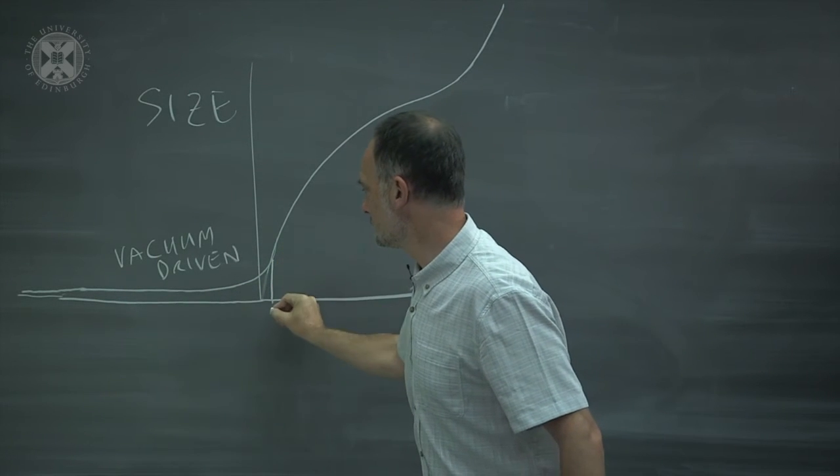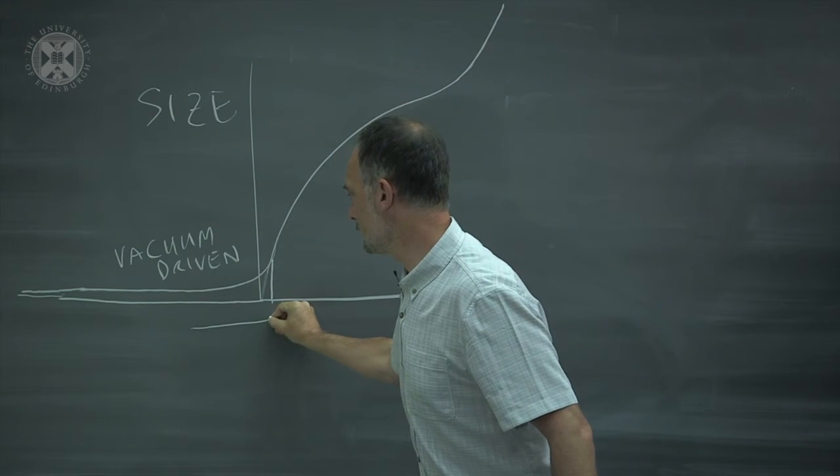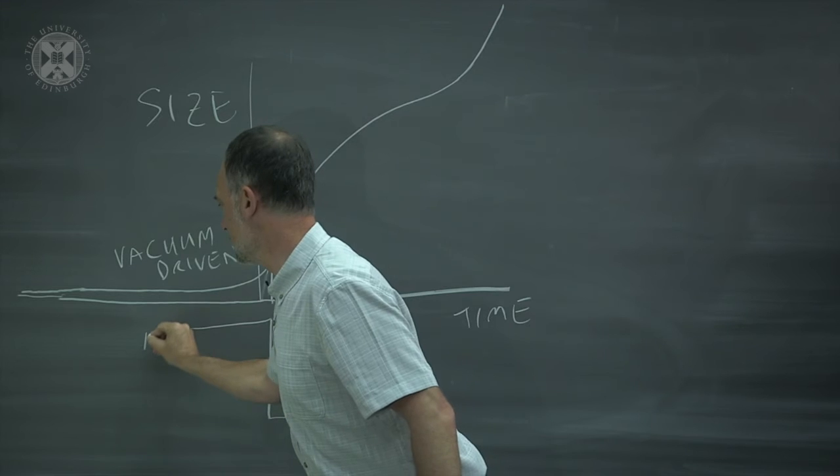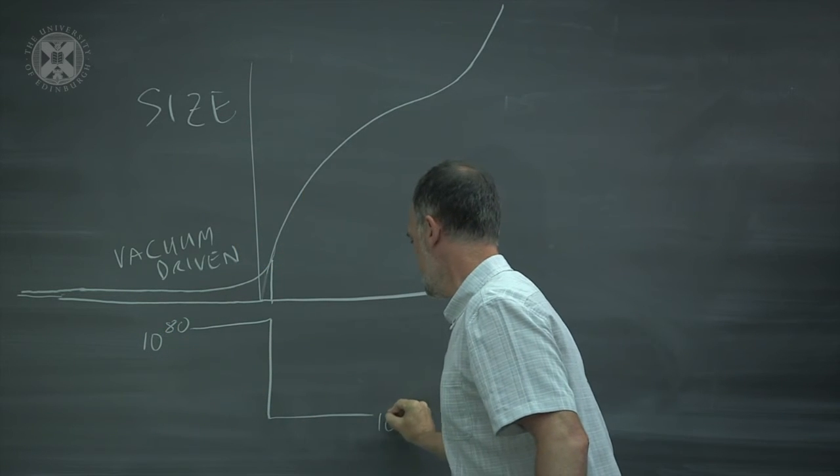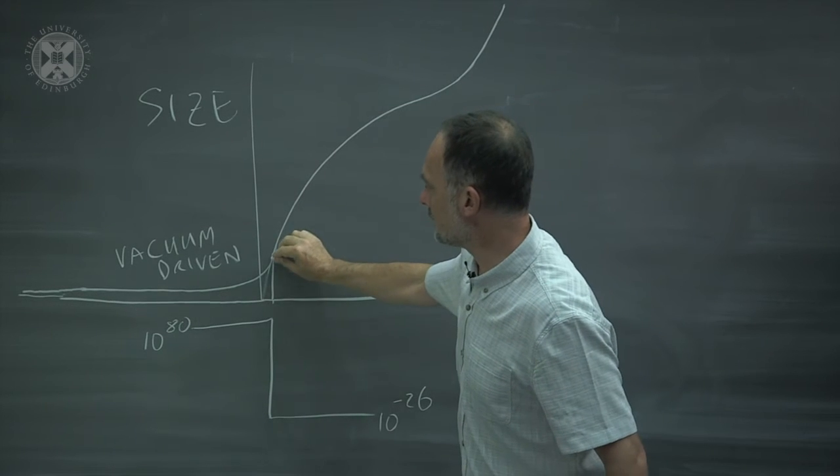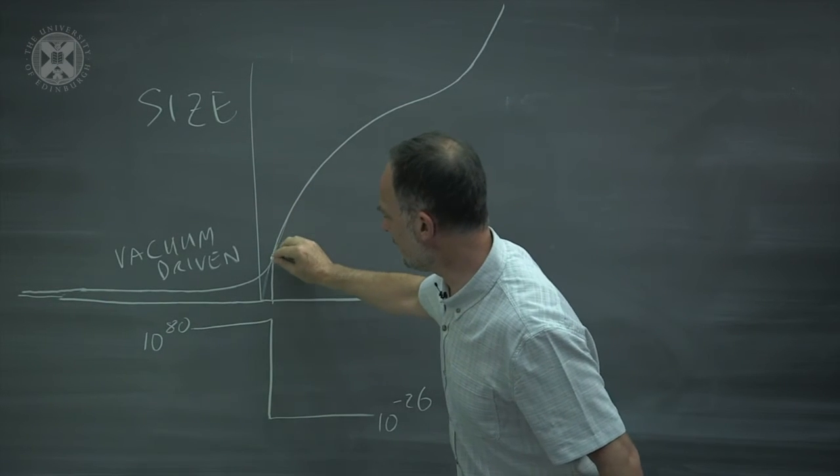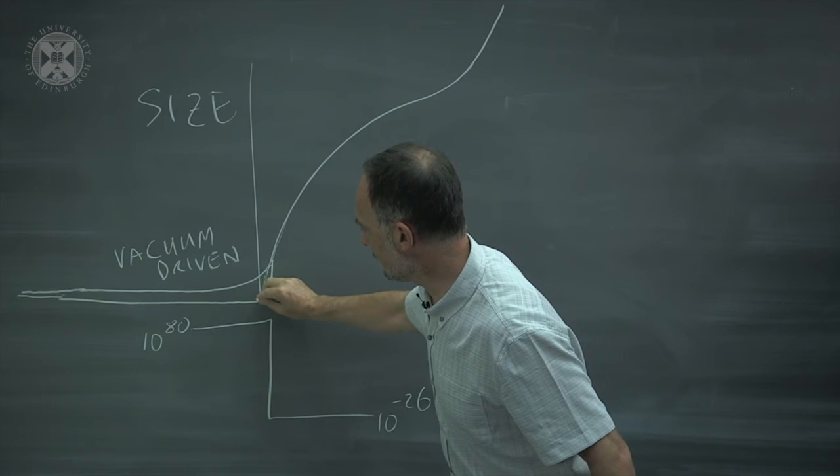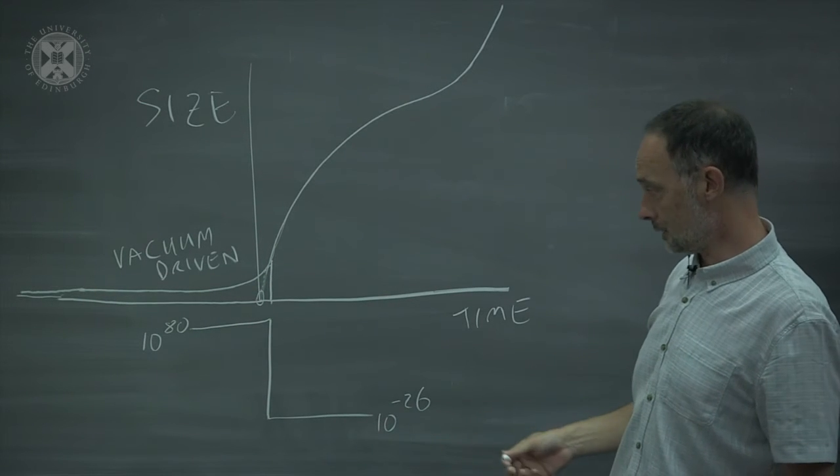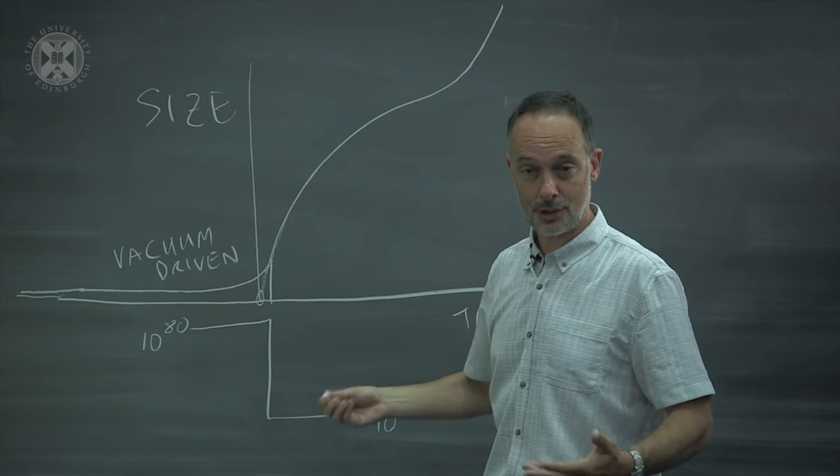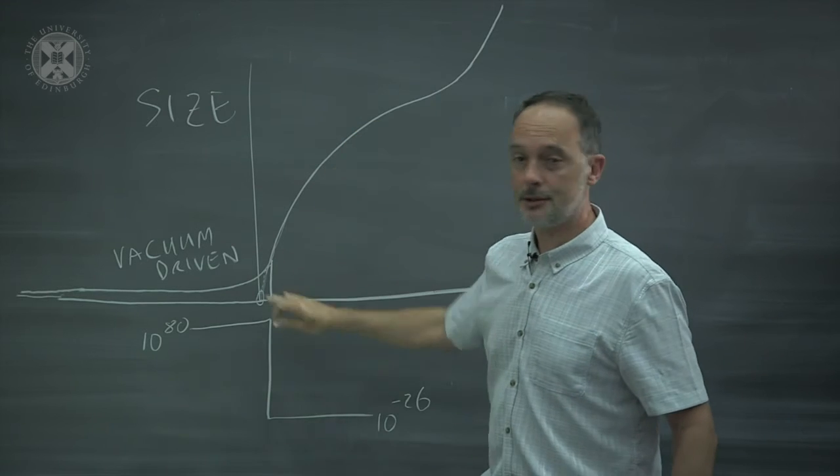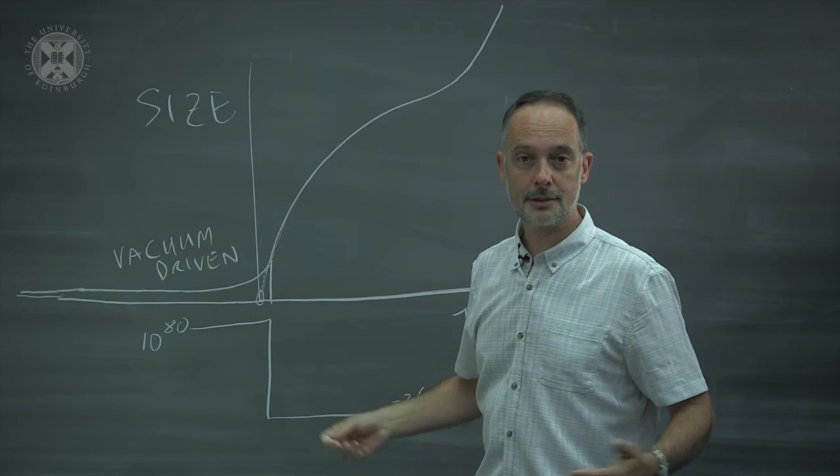The expansion of the universe is driven by the energy density of the vacuum. About here, the energy density of the vacuum falls to its present very low value. So here it's 10 to the 80. Here it's 10 to the minus 26. And the universe switches over to what looks like a Big Bang universe. And we think that it came from this singularity here. But actually, that's an incorrect extrapolation. We didn't allow for the fact that the vacuum energy could change. And if you allow for that, then actually there was no Big Bang at all. In some sense, it's just an illusion.